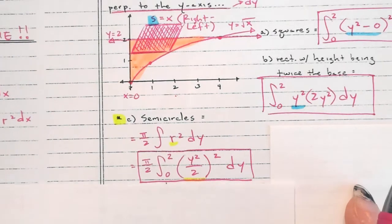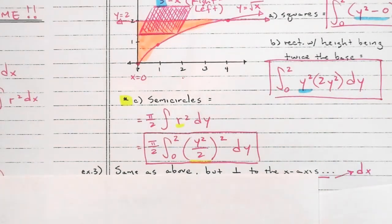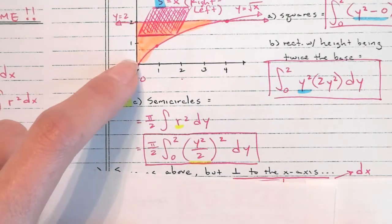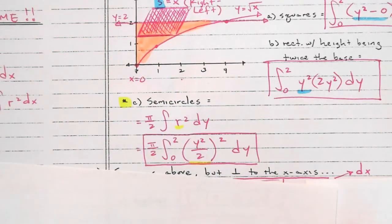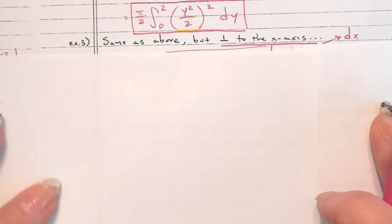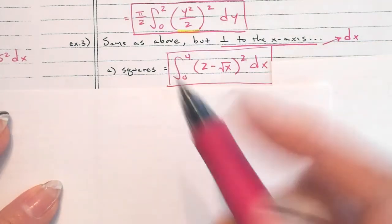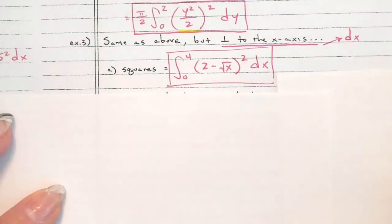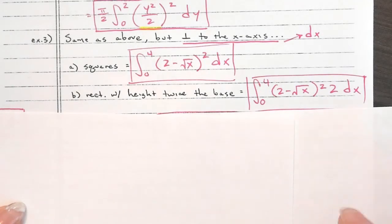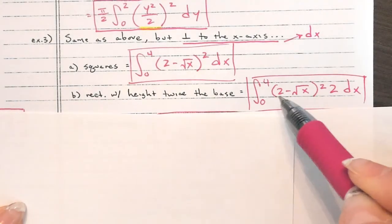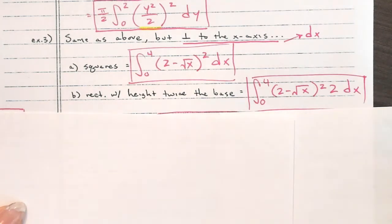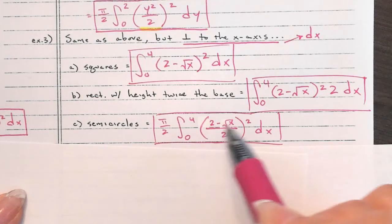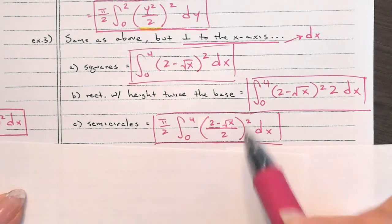How does this look different if we're in terms of x? Instead of 0 to 2 in terms of y, now we're on the x-axis. So check these answers: 0 to 4 on the x-axis, top minus bottom, quantity squared. For the rectangle it's 0 to 4, base times height times 2, so I just wrote it squared instead. For semicircles: π/2, 0 to 4, base divided by 2 to get the radius, and then radius squared.